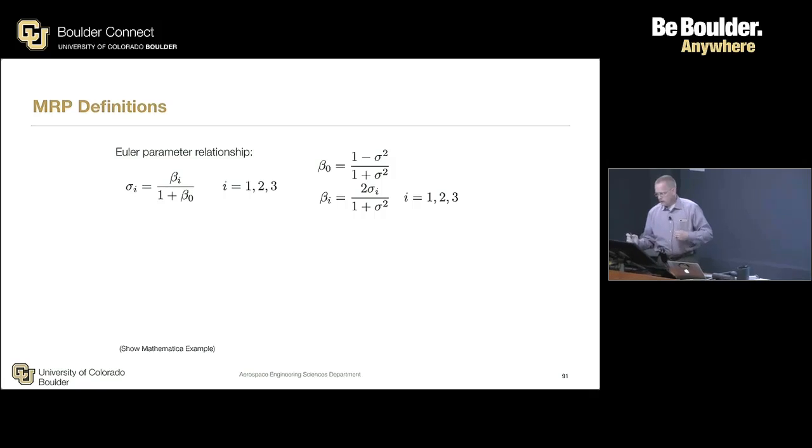Instead of defining like CRPs, we had beta i over beta 0. Now we have beta i over 1 plus beta 0. So Warda, she was saying earlier that these went singular if beta 0 went to 0. If I have a 0 rotation, beta 0 is 1, so I divide by 2. Easy. If I have upside down, beta 0 goes to 0. I still have 1, that's not bad.